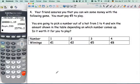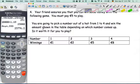You are going to pick a number out of a hat from 1 to 4 and win the amount shown in the table depending on which comes up. Is it worth to play? So here's the number, here's the winning. What is missing from this table that you'd like to put in?